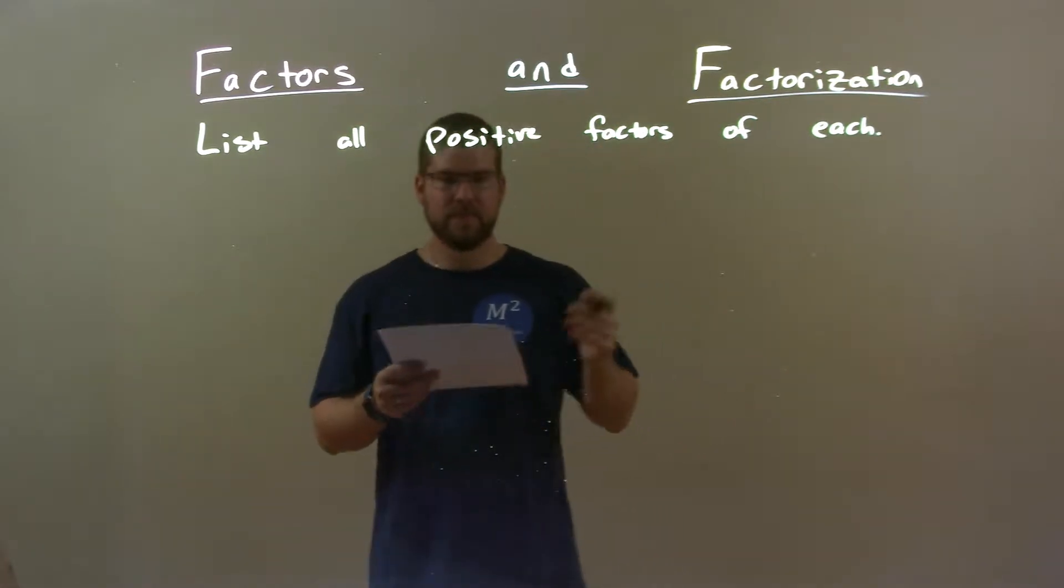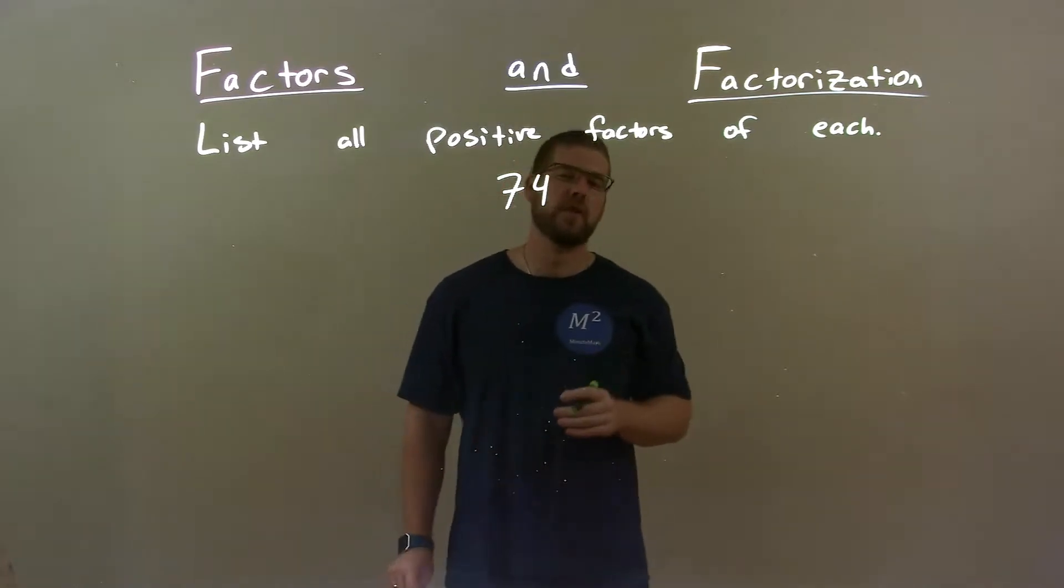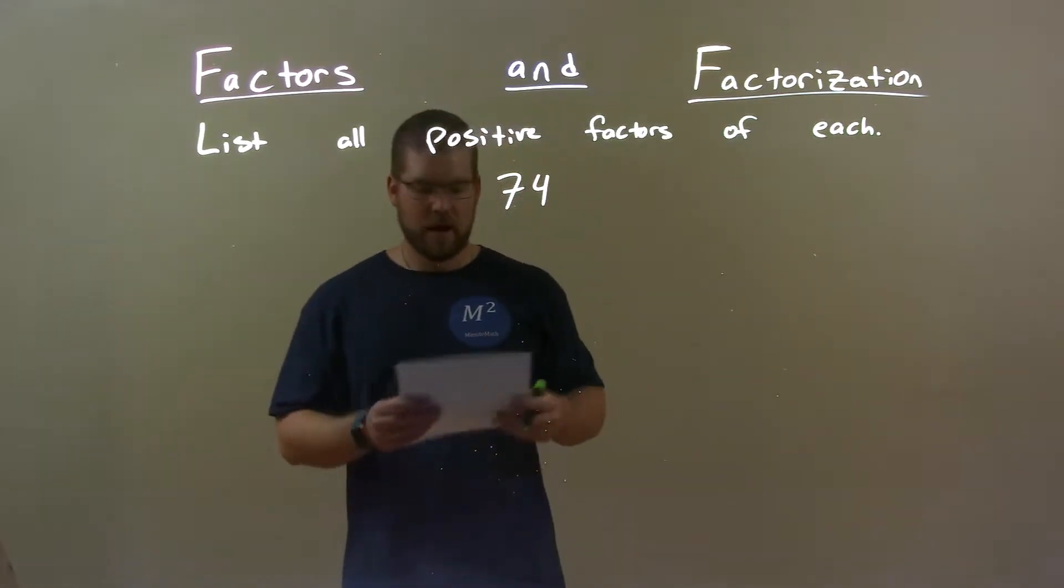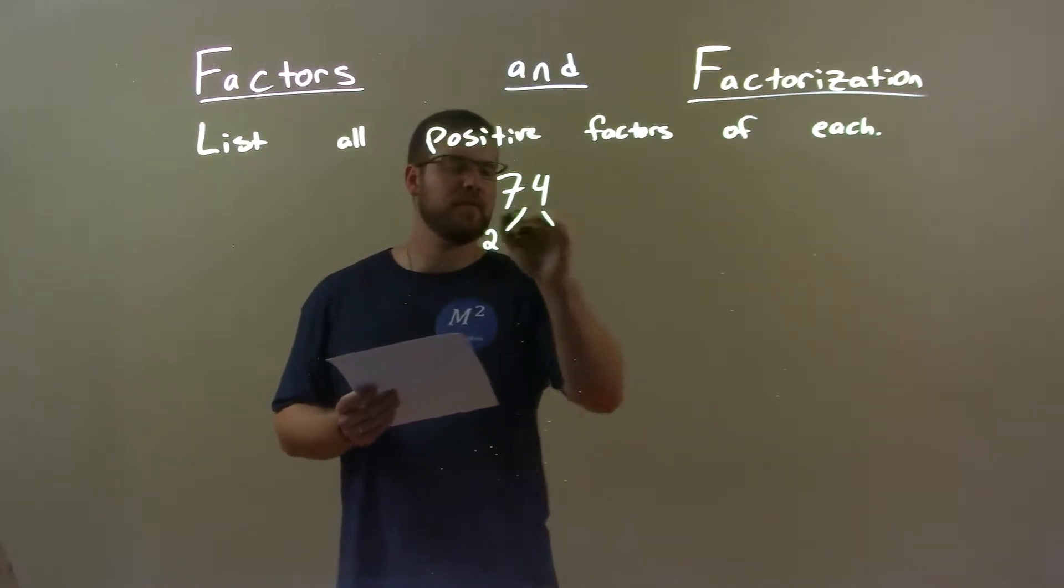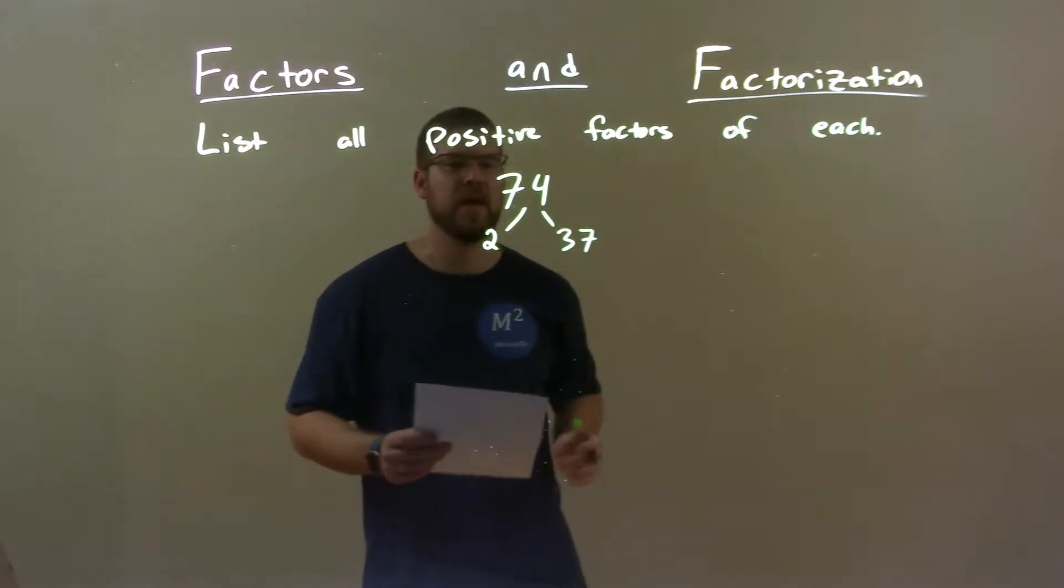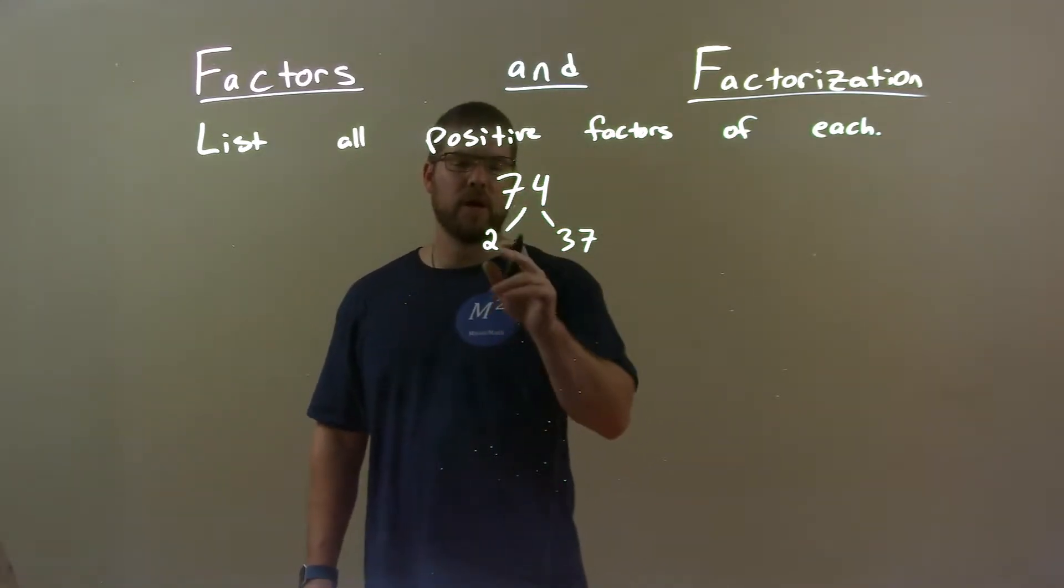So, if I was given this number, 74. Well, first thing I do here is I break down the prime factorization of 74. Well, 74 is divisible by 2, and it's 2 times 37. Now, we have our prime numbers though. 37 is prime and so is 2.